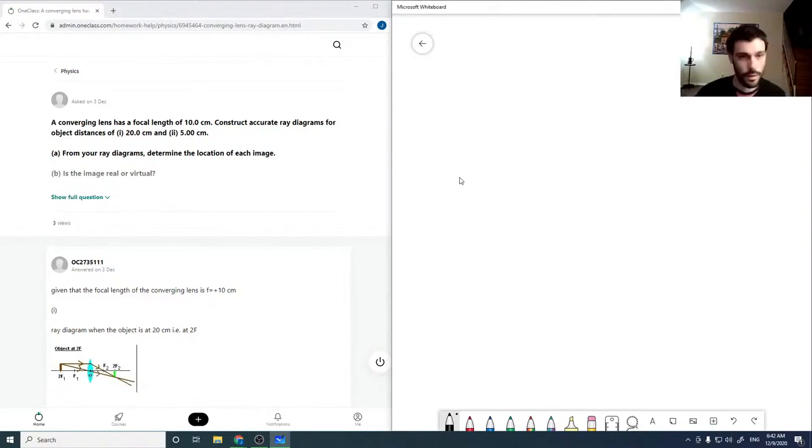Okay, so here we have a converging lens, and so if we have our focal point, it wants us to try to draw things as well as possible. And I'm already kind of messing it up, but let's see if I can not mess it up. So I'm going to try to draw this nice and big like this.